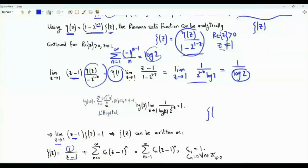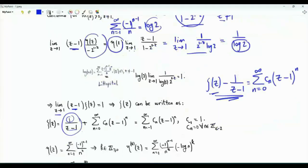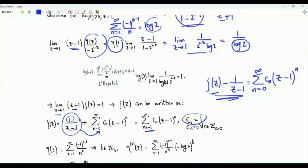We are interested in the power series expansion of zeta of z minus 1 over z minus 1, about 1. We want to write down this difference as summation n from 0 to infinity of coefficient c_n times z minus 1 to the power n. This term can be merged into the sum by starting from n equal to minus 1 and using c of minus 1 equal to 1. c of any integer that is minus 2 or less is equal to 0.